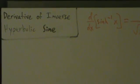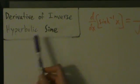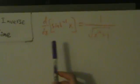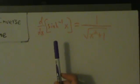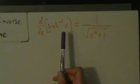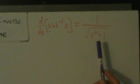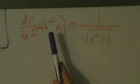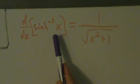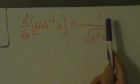Let's talk about the derivative of the inverse hyperbolic trig functions. We're going to start with the inverse hyperbolic sine function. The derivative d/dx of inverse hyperbolic sine of x equals 1 divided by the square root of x squared plus 1.